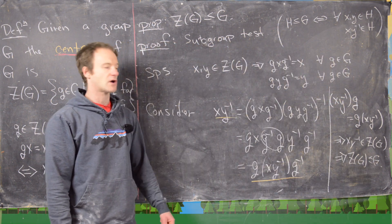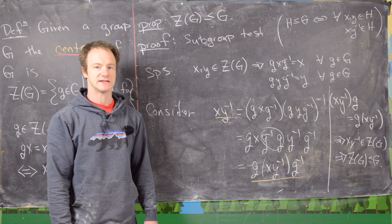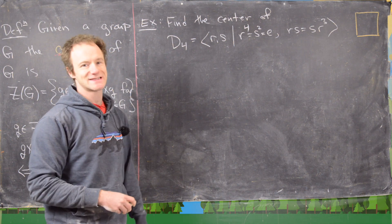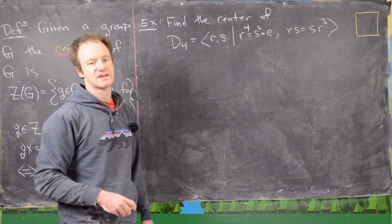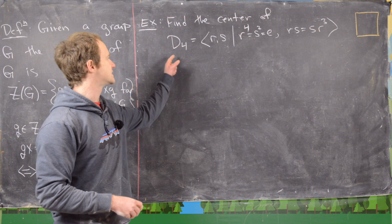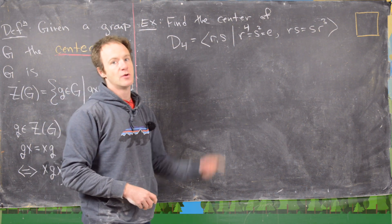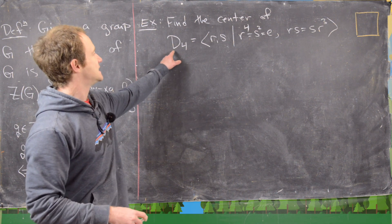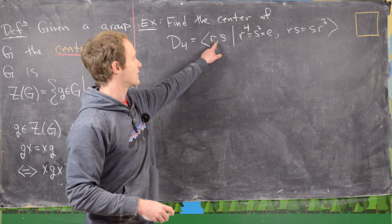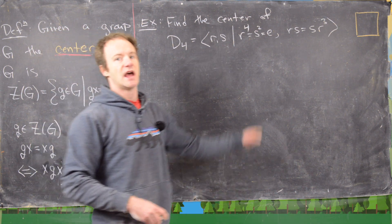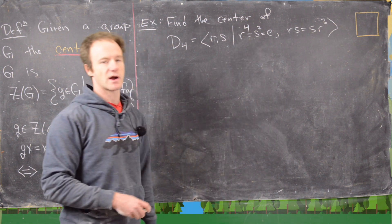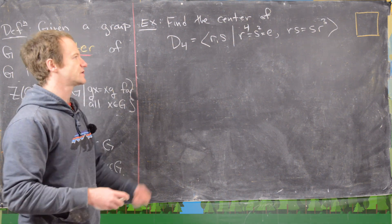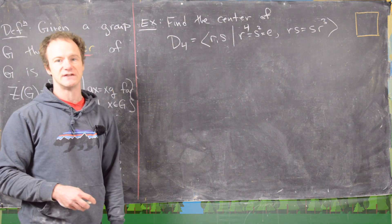For our example we're going to find the center of the group of symmetries of the square — the dihedral group D4, which is a group of order 8. D4 is generated by R and S, with R to the fourth equals S squared equals the identity, and RS equals SR cubed. Those are the defining relations for D4.